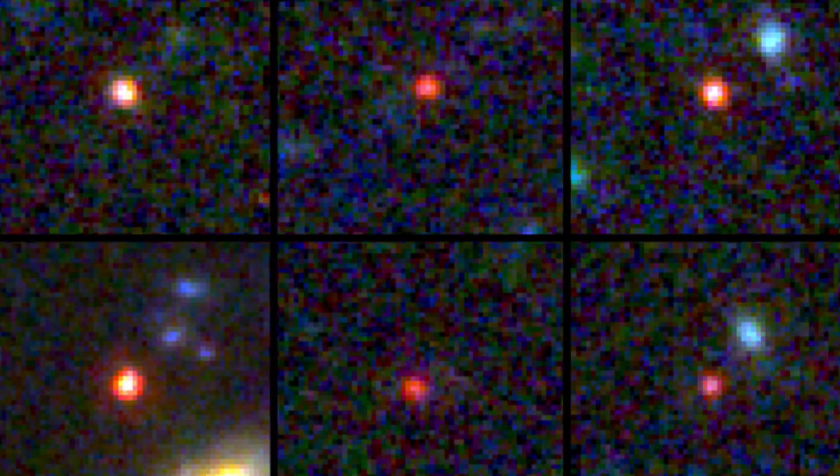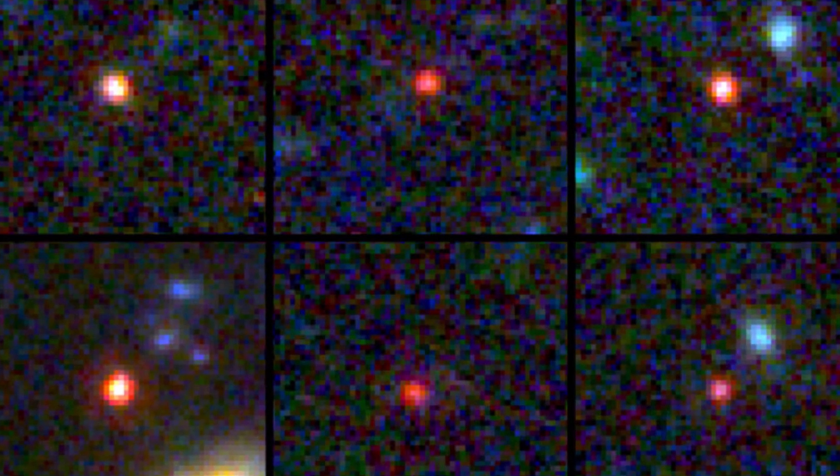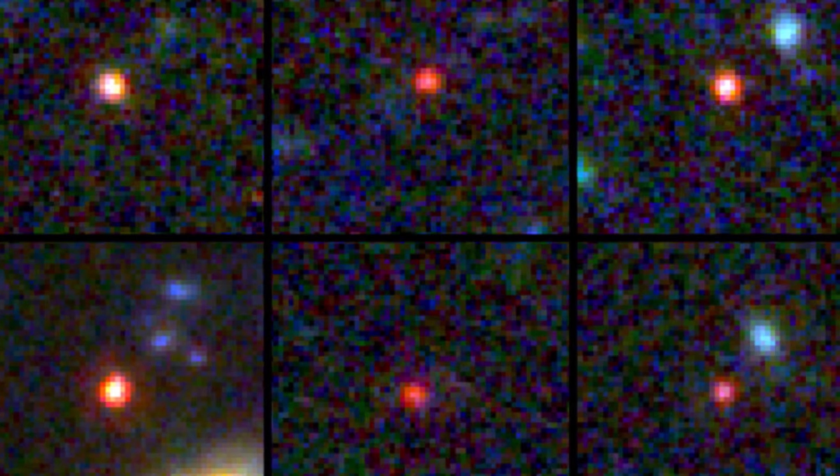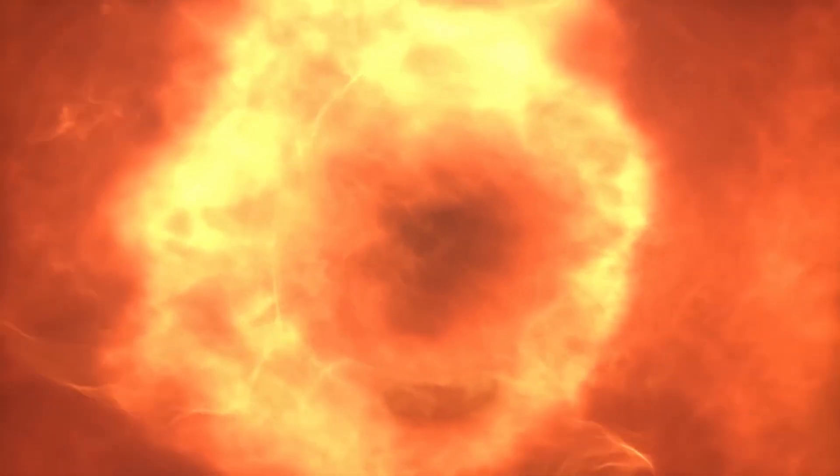Although the sample is small, it is still a remarkable difference. It is possible that these objects are not galaxies at all. Another possibility is that they are other kinds of strange objects, such as faint quasars, which would be quite interesting.